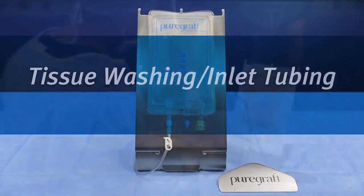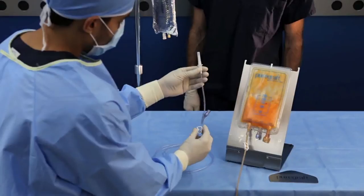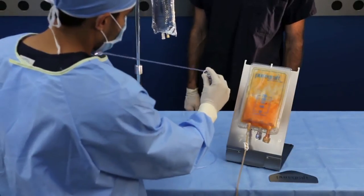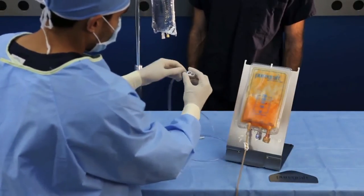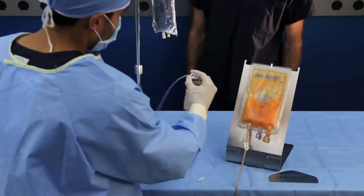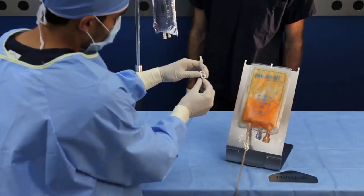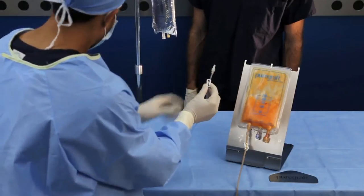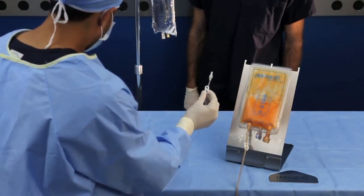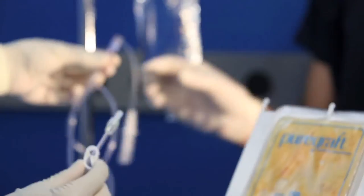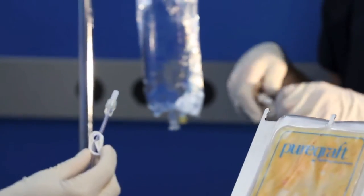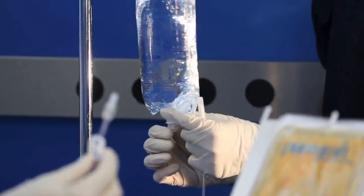For the second wash, the alternate lactated Ringer's addition method using the inlet tubing set is shown. For this method, close the clamp on the inlet tubing set and spike the lactated Ringer's bag.